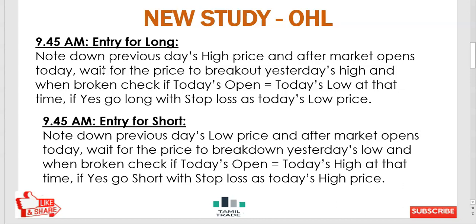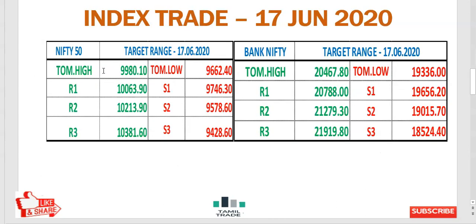Tomorrow Nifty trend: potting not 9,998 — chances are there. First resistance is 10,063. Cross the first resistance is 10,213. Cross the first resistance is 10,213. Next day low 9,662 are there; next day 9,746 — one point, then break that one.